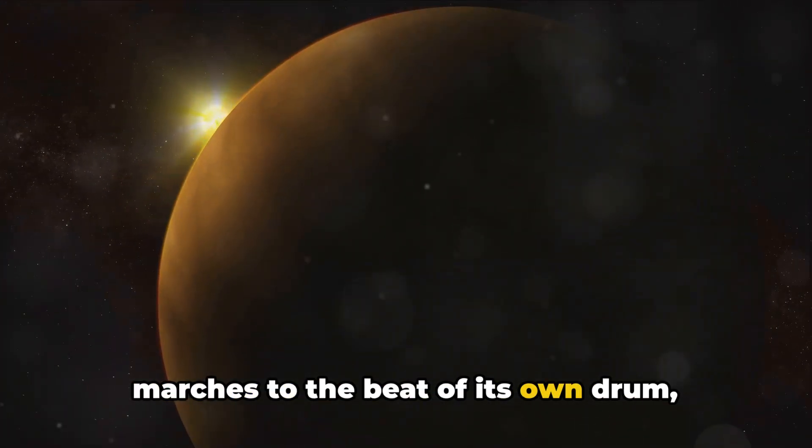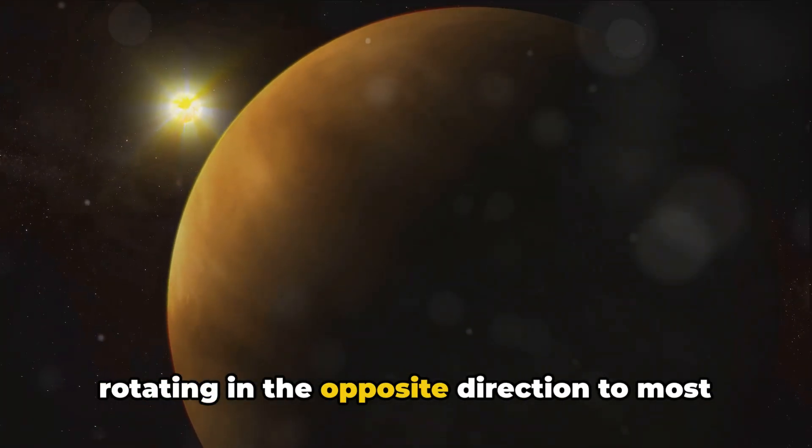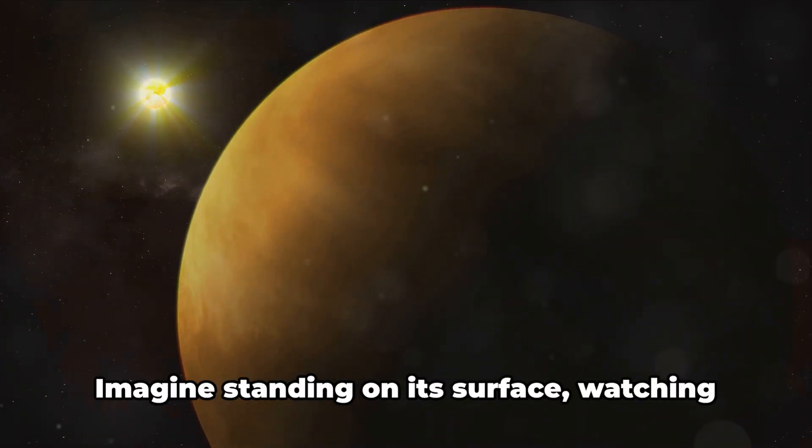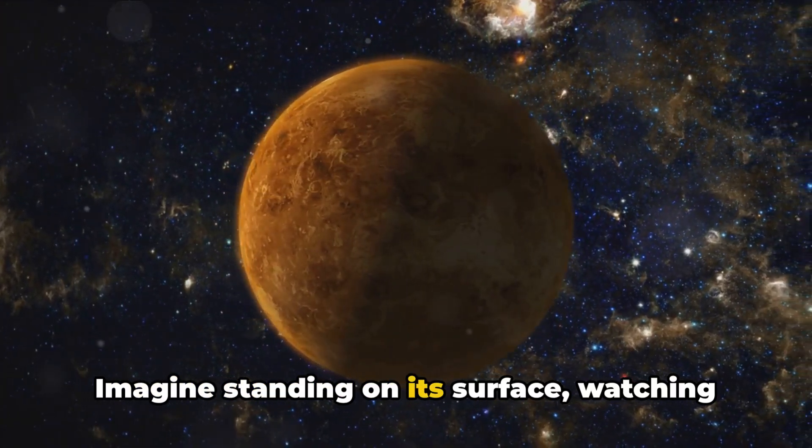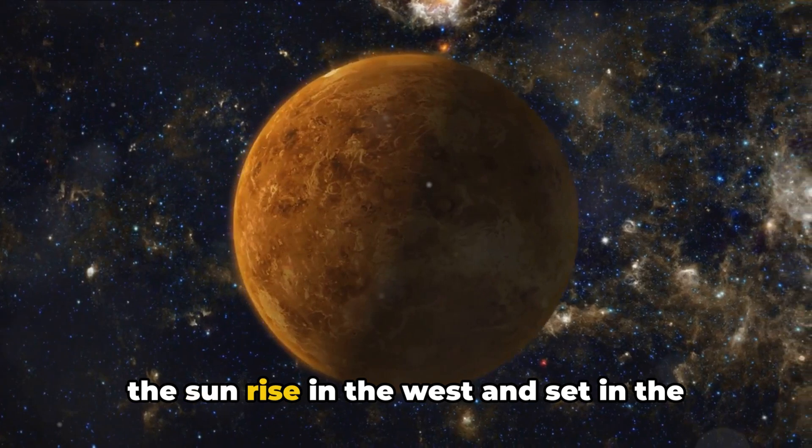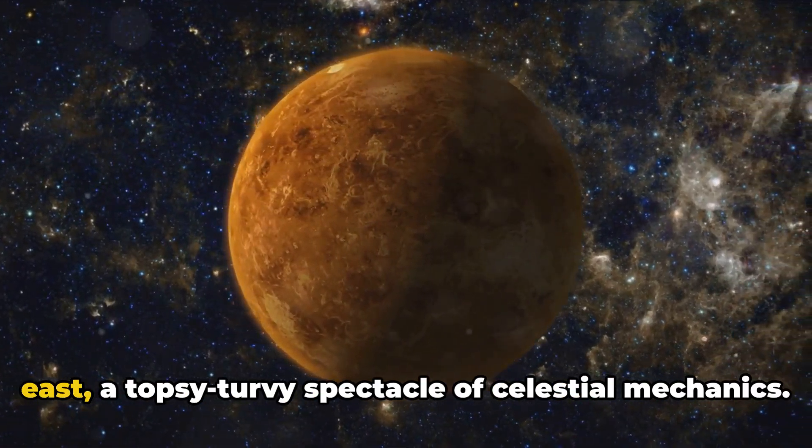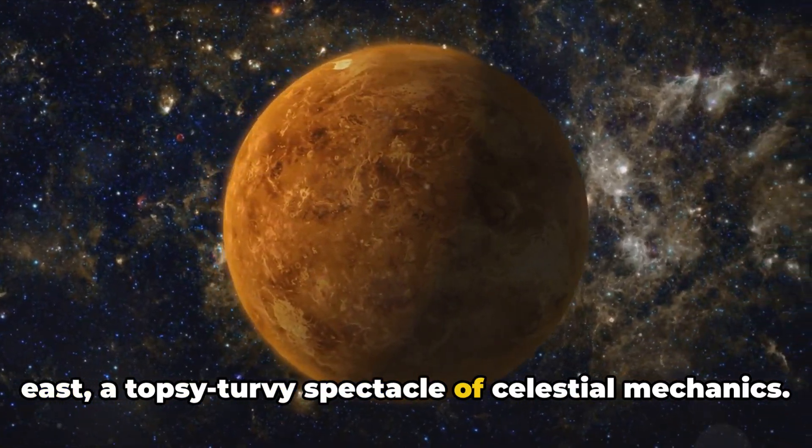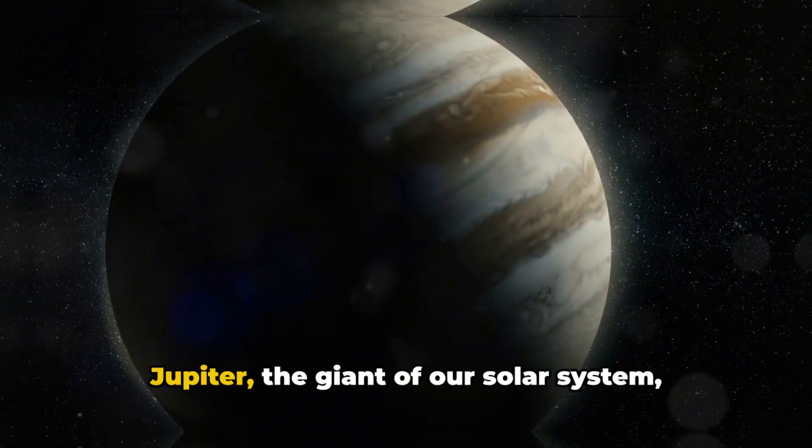Venus, our solar system's second planet, marches to the beat of its own drum, rotating in the opposite direction to most other planets. Imagine standing on its surface, watching the sun rise in the west and set in the east, a topsy-turvy spectacle of celestial mechanics.